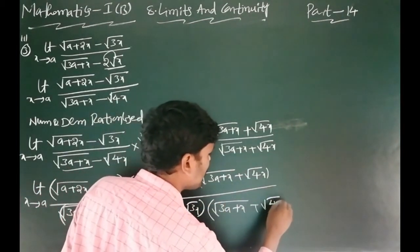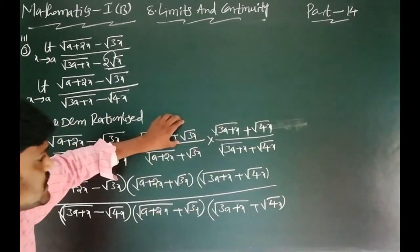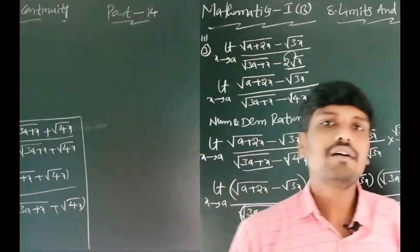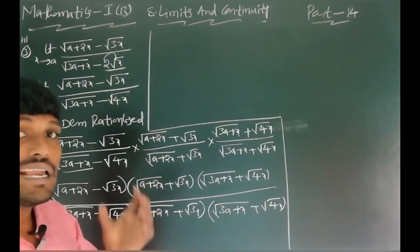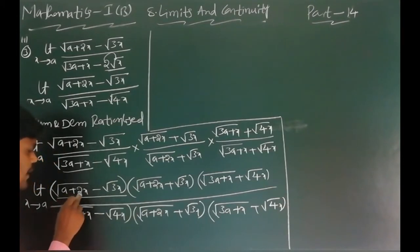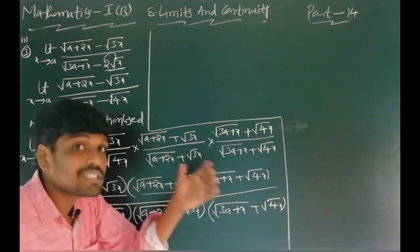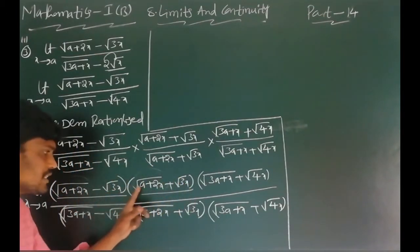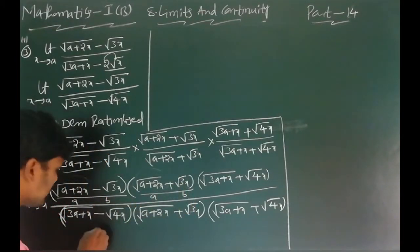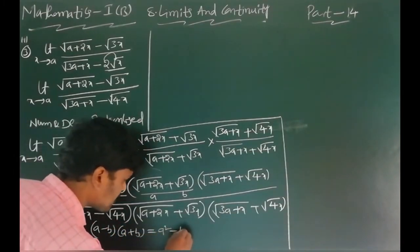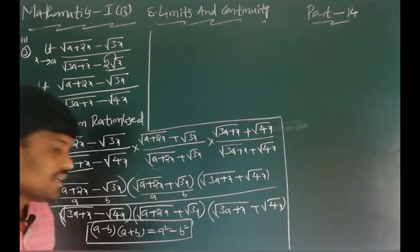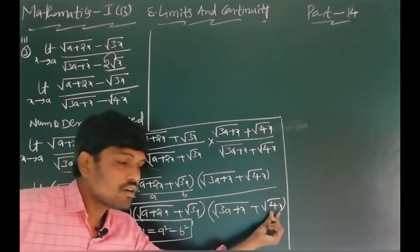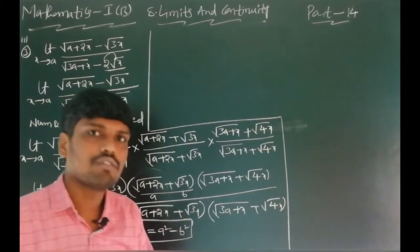In the numerator, the first two terms √(a+2x) - √(3x) multiplied by √(a+2x) + √(3x) are in the form (a-b)(a+b). The formula for (a-b)(a+b) is a² - b². Similarly in the denominator, √(3a+x) - √(4x) multiplied by √(3a+x) + √(4x) is also in the form (a-b)(a+b), giving a² - b².